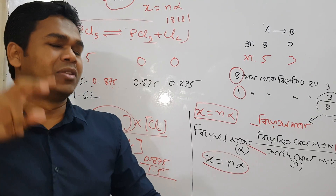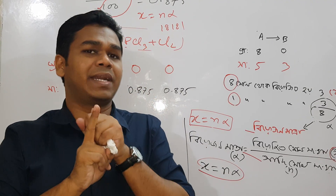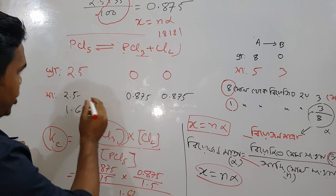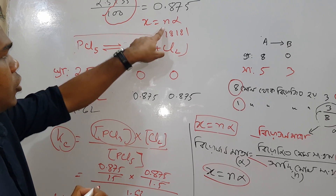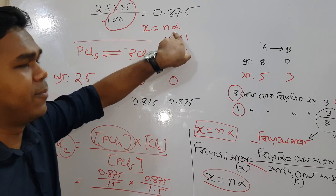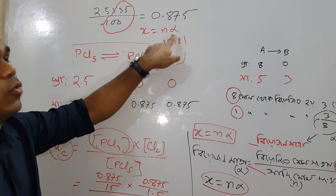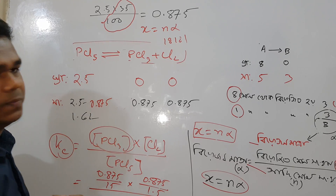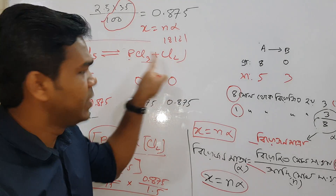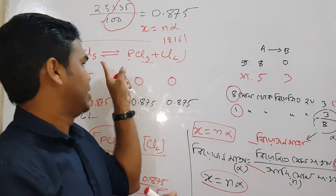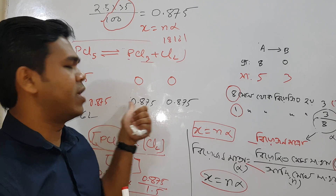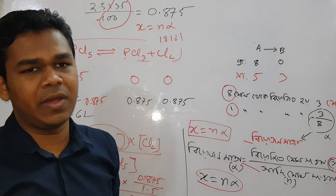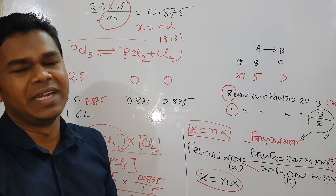So we have to take this math. This is 2.5 and x is equal to n·alpha. So if you tell the alpha, you can just add x to x. We can add 0.875. The first thing is 1 to 1. I will show you in the next video. God bless you.